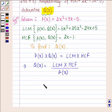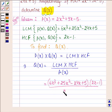Let's now put the values of LCM, HCF, and P(x). LCM is 6x³ + 25x² - 24x + 5, HCF is 2x - 1, whole divided by P(x), which is 2x² + 9x - 5.